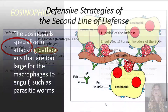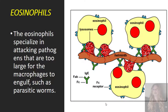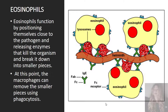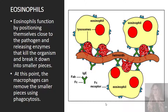The eosinophils specialize in attacking pathogens that are too large for the macrophages to engulf, such as parasitic worms like this helminth here. Eosinophils function by positioning themselves close to the pathogen, then they release enzymes that kill the organism by breaking it down into smaller pieces. At this point, the macrophages can remove the smaller pieces using phagocytosis.